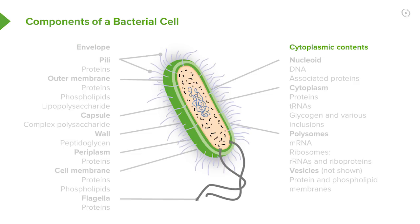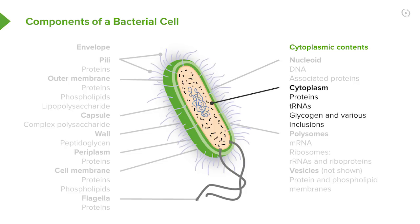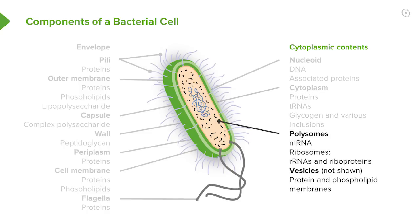The cytoplasmic contents include the nucleoid, which is made up of DNA and its associated proteins. We have the cytoplasm, which is chock full of things: proteins, transfer RNAs for protein synthesis, glycogen, and various other inclusions. And polysomes — the sites of protein synthesis on mRNA — ribosomes, transfer RNAs, riboproteins, and finally the vesicles, which we can't see here, that have various inclusions in them.